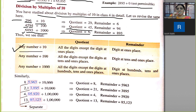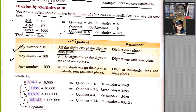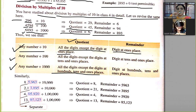Any number divided by 10: all digits except the digit at the ones place become the quotient; the digit at the ones place is the remainder. Any number divided by 100: all digits except the digits at the tens and ones place become the quotient; the digits at the tens and ones place are the remainder. Any number divided by 1000: all digits except those at the hundreds, tens, and ones place become the quotient; the digits at those places form the remainder.